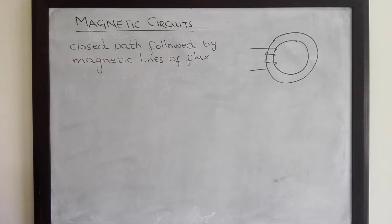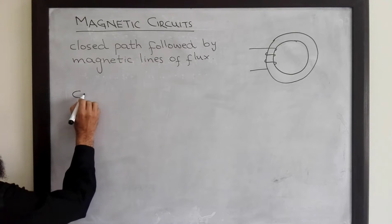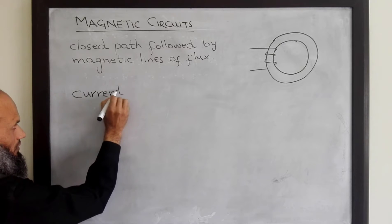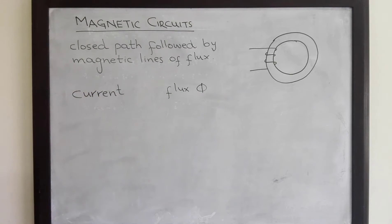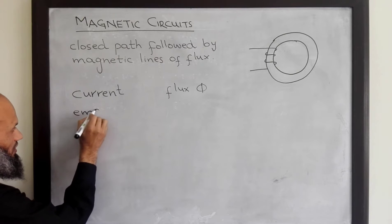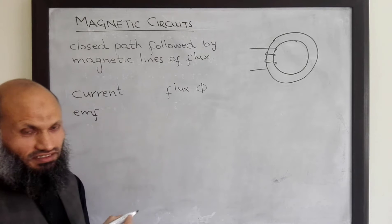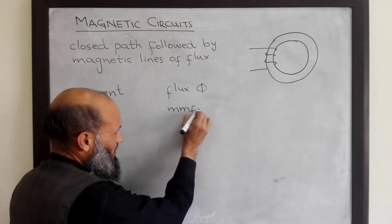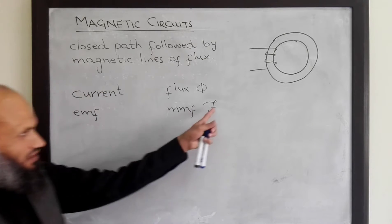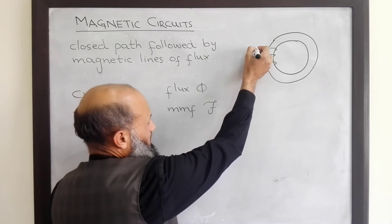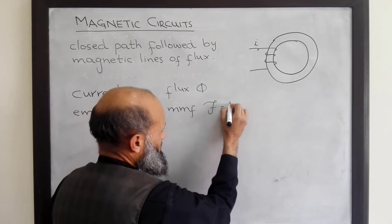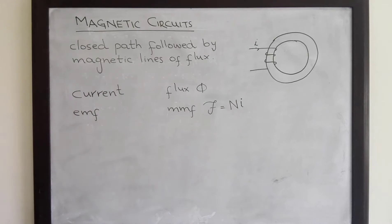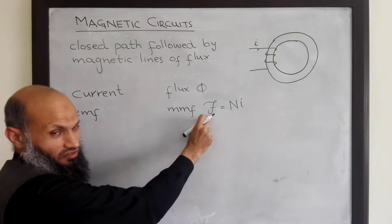Magnetic circuits are quite analogous to electrical circuits. In electrical circuits current is flowing, whereas in magnetic circuits flux is flowing. The quantity in electrical circuits which causes the current to flow is called EMF or electromotive force, and in magnetic circuits it is magnetomotive force, MMF. This magnetomotive force is proportional to the current in the conductor and also proportional to the number of turns of the wire. That is, MMF equals number of turns multiplied by current. The units of MMF are ampere turns.